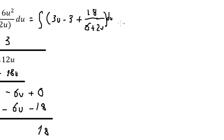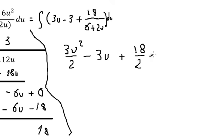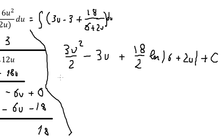So we can get the final answer. The integral of 3u gives 3u squared over 2. For negative 3 we get negative 3u. And 18 divided by 2 gives 9, times the natural log of the absolute value of 6 plus 2u, plus C, in terms of u.